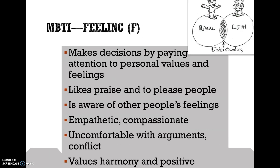The next one is F — Feeling. Feeling types make decisions by paying attention to personal values and feelings. They like praise and to please people, are aware of other people's feelings, and are empathetic and compassionate. They're uncomfortable with arguments and conflict, and value harmony and positive interactions. You can see where these relate to career and job choices — someone with Thinking might be more of a lawyer or logical thinker, while Feeling would be more of a psychologist or nurse.